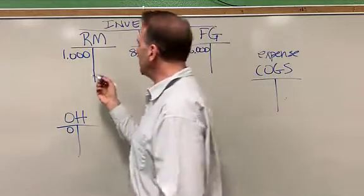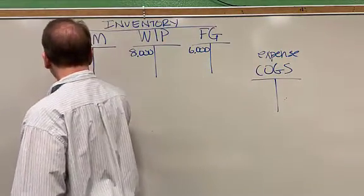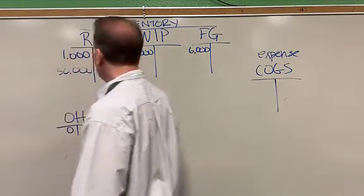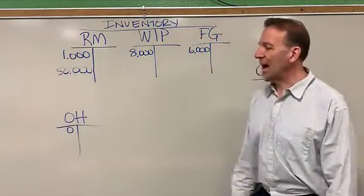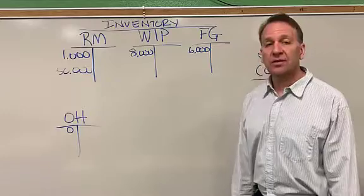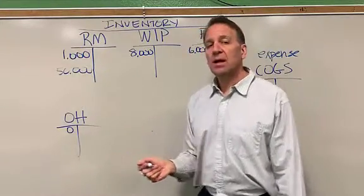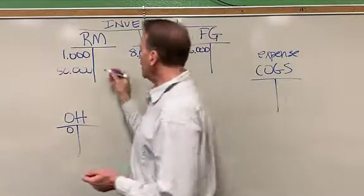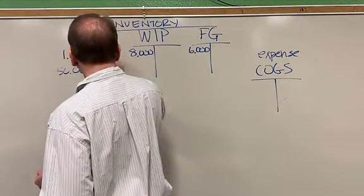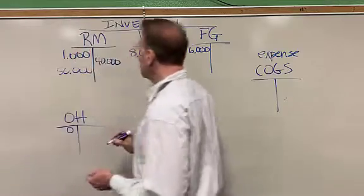Let's say that during the period we purchased $50,000 worth of materials. So now we've got $50,000 added to the thousand. So we've got $51,000. Let's say during this time period, $40,000 of direct materials were moved out.